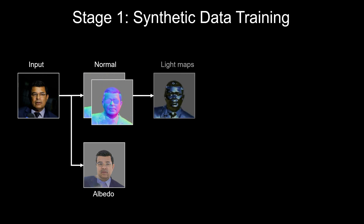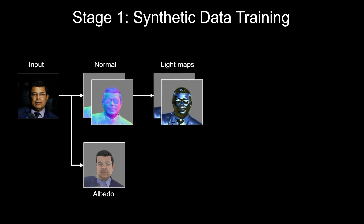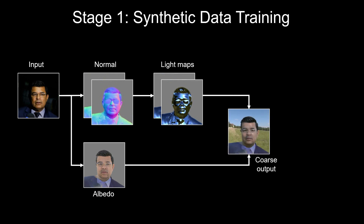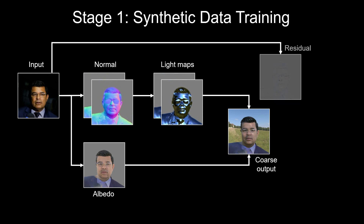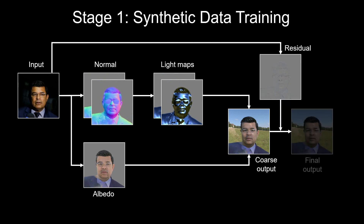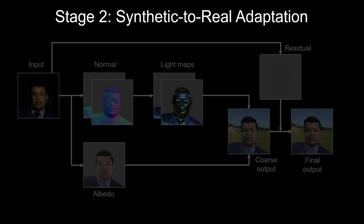The estimated normals are then used to generate light maps, which are combined with the albedo to get an initial rendering. Our rendering network then only synthesizes the details to be added to this coarse rendering, which allows us to better preserve details in the input image.